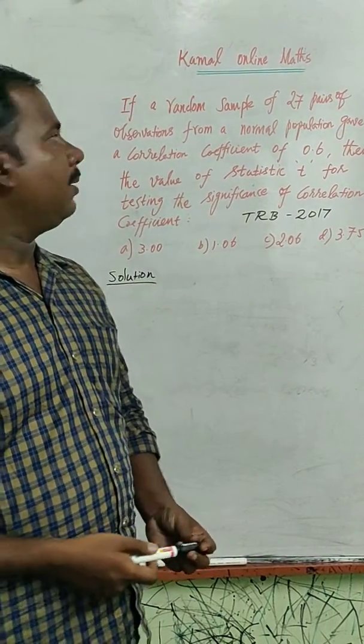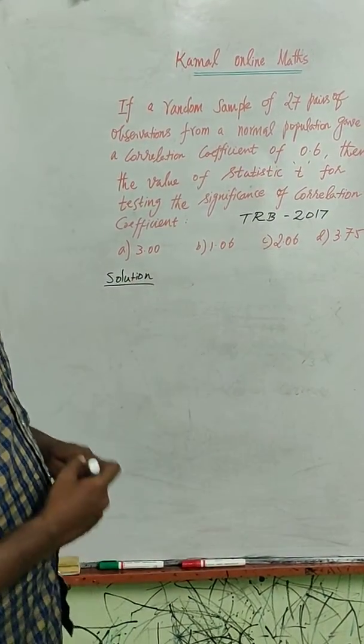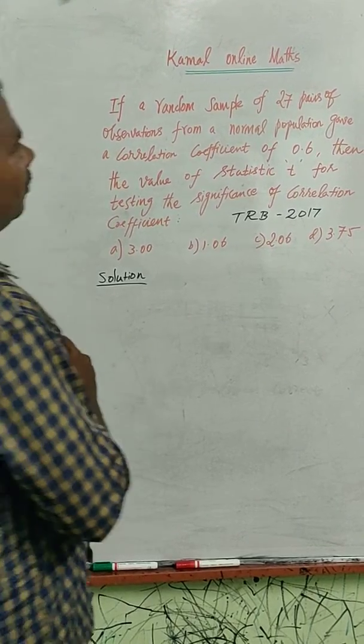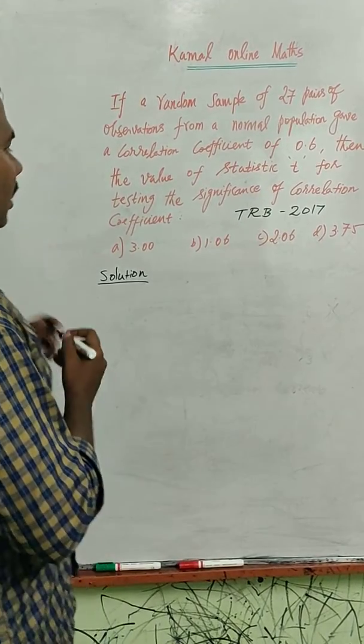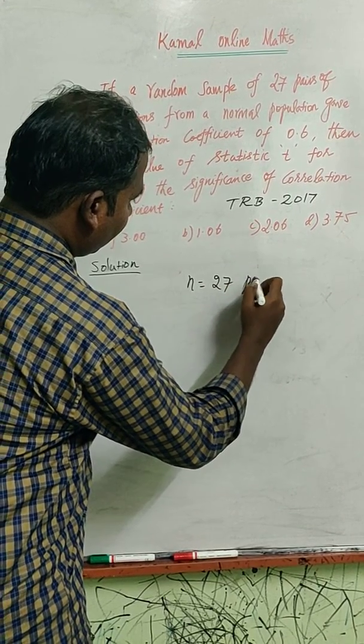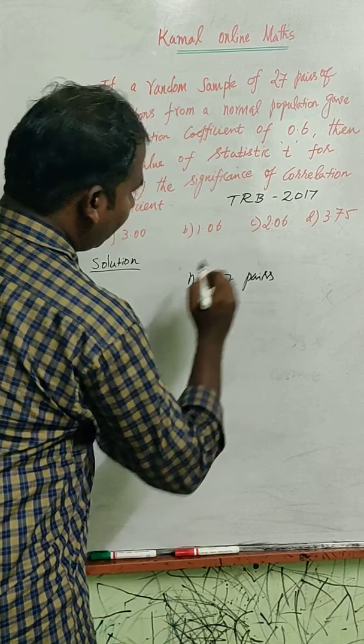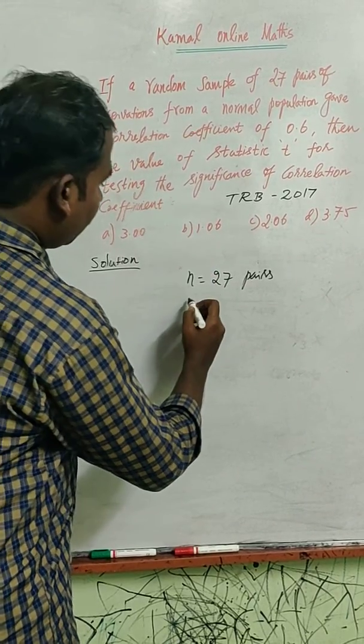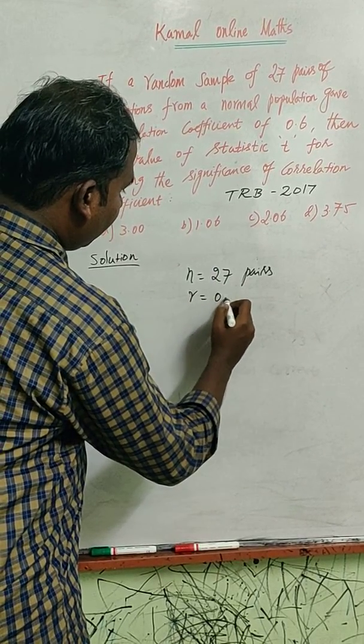t value n would link it to you. We have options. We have 27 pairs, so it is n. Correlation coefficient is r, 0.6.